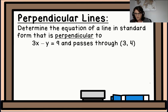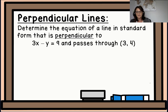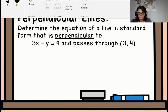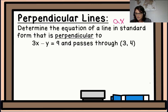Our first question is about perpendicular lines. Determine the equation of a line in standard form that is perpendicular to 3x minus y equals 9 and passes through the point (3, 4). A couple of things to remember: standard form is in the form ax plus by plus c equals 0.